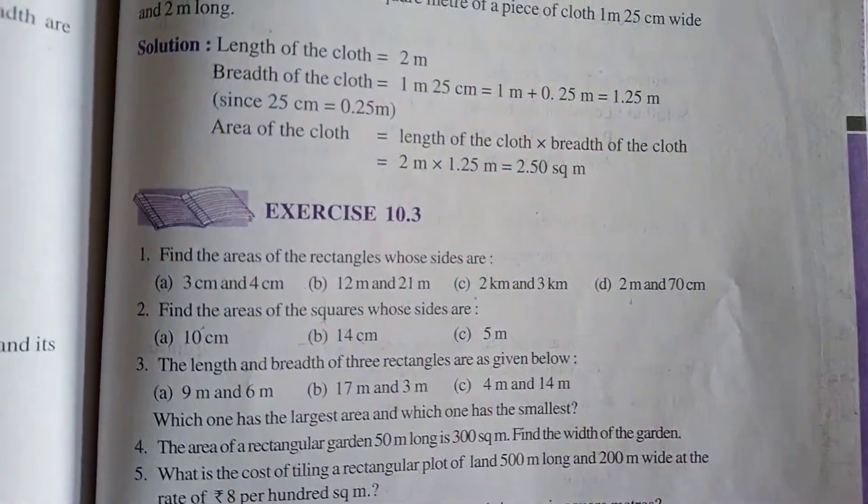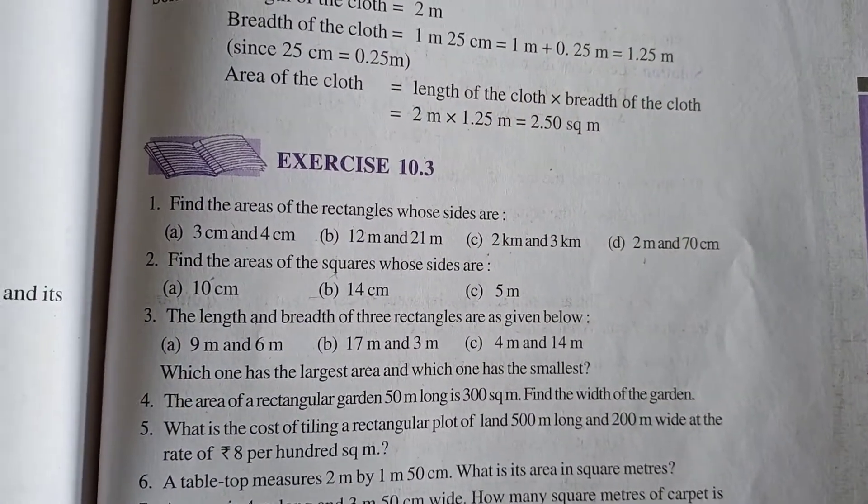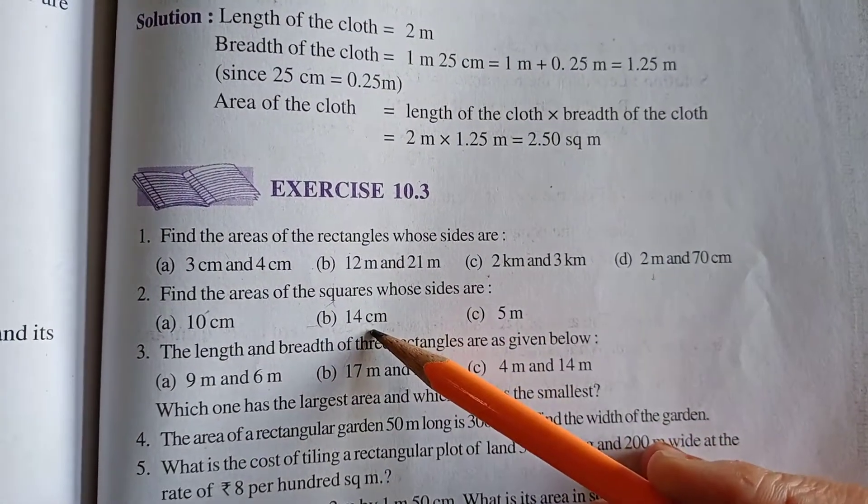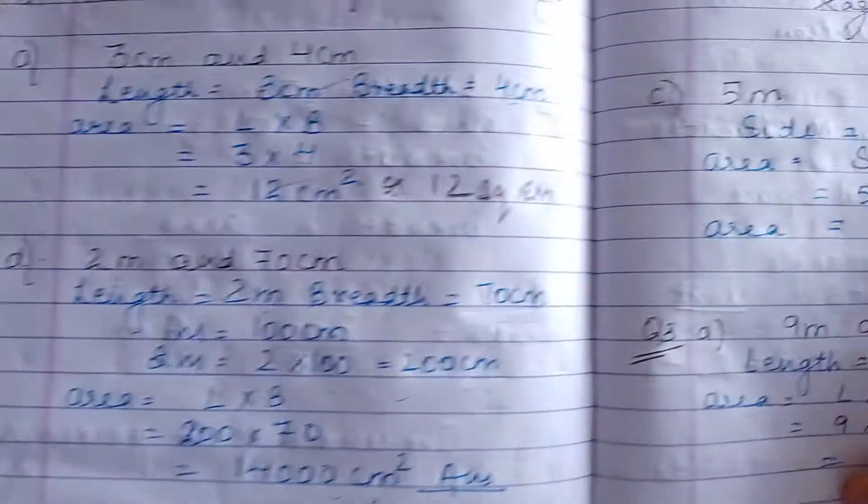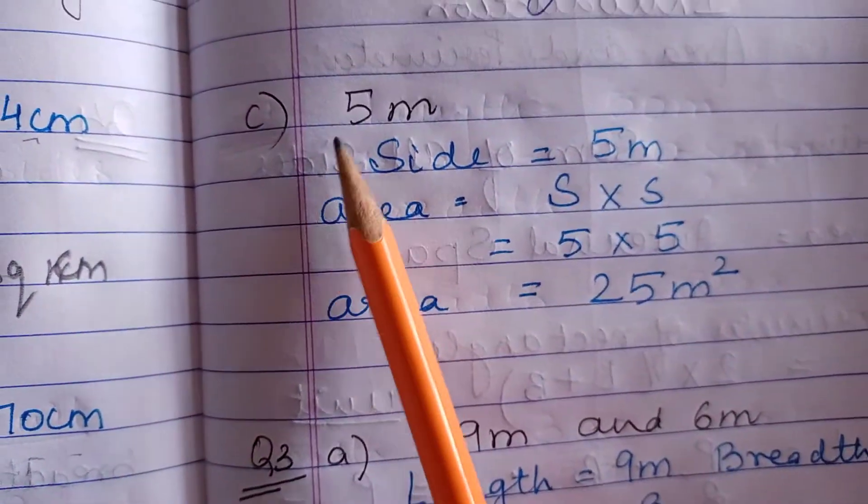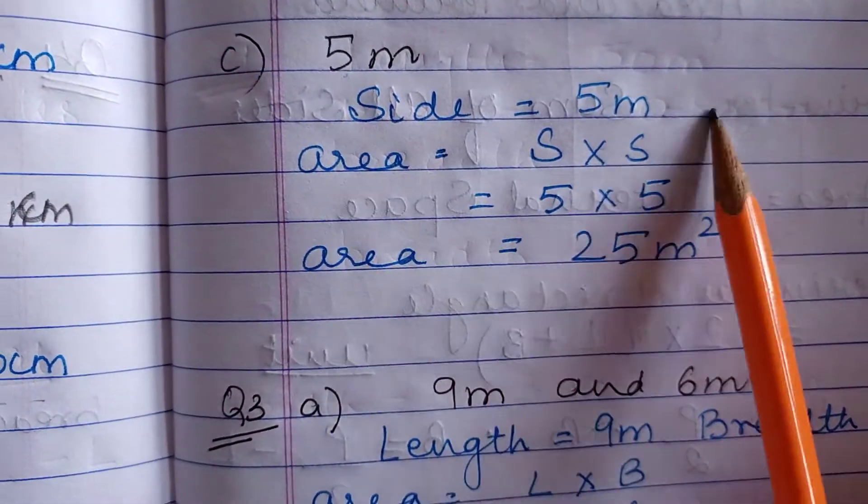Part B, 14 cm. Students you will do it by yourself. You just have to multiply 14 into 14. Let's do part C now. Now here in part C, 5 meter is given. Side is 5 meter.